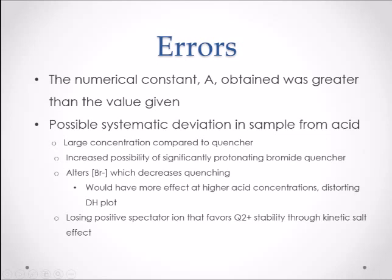We presume that the biggest error in our experiment came from the influence of nitric acid. Because the concentration of nitric acid was significantly larger than the bromide ion quencher concentration, there was an increased chance of bromide ion protonation. This would result in decreased bromide ion concentration, which would in turn decrease quenching and distort the Debye-Hückel plot. This would have also resulted in the loss of positive sodium spectator ions that favor quinine dication stability through the kinetic salt effect. We think that these errors are the reason that our numerical constant, which turned out to be 1.61, deviated from the given numerical constant of 1.16.